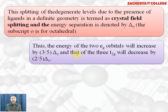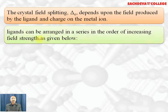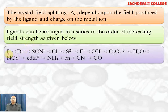The crystal field splitting Δo depends upon the field produced by the ligand and the charge on the central metal ion. The stronger the ligand, the more will be the crystal field splitting energy; the higher the charge and smaller the cation, the more will be the splitting energy. Ligands can be arranged in increasing order of field strength in the spectrochemical series: I⁻ < Br⁻ < SCN⁻ < Cl⁻ < S²⁻ < F⁻ < OH⁻ < C₂O₄²⁻ < H₂O < NCS⁻ < EDTA⁴⁻ < NH₃ < en < CN⁻ < CO.